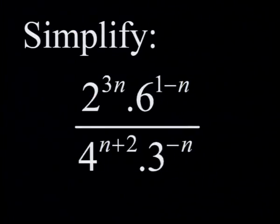Simplify 2 to the power 3n times 6 to the power 1 minus n, all divided by 4 to the power n plus 2 times 3 to the power of minus n.